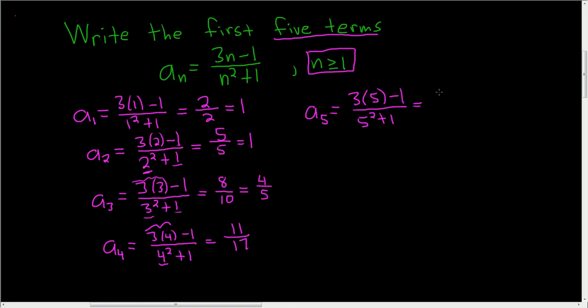3 times 5 is 15. 15 minus 1 is 14. And on the bottom, looks like we get a 26. 25 plus 1 is 26. Divide the 14 by 2, that gives you 7. Divide the 26 by 2, that gives you 13.